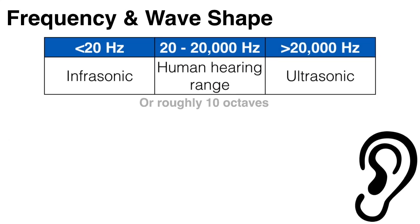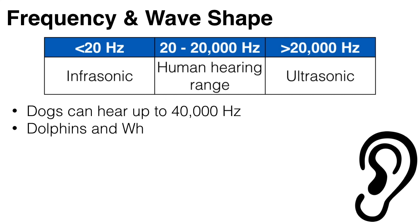Now, the human ear can generally hear frequencies between 20 and 20,000 hertz. This is about 10 octaves. Incidentally, dogs can hear up to about 40,000 hertz, and whales and dolphins can hear up to about 175,000 hertz.